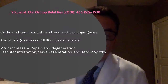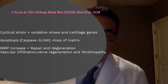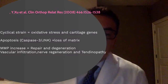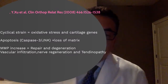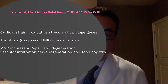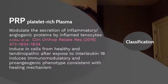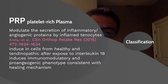The hypothesis is that cyclical strain can produce oxidative stress and expression of cartilage genes, as well as decreased cell death mediated by these enzymes. Loss of matrix also produces increased MMP production, which can drive both repair and degeneration, leading to vascular infiltration, nerve regeneration, and ultimately tendinopathy.